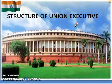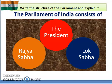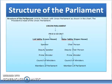First of all, let us discuss what is meant by structure of Union Executive. The Union Executive or the Parliament consists of the President, Rajya Sabha and Lok Sabha. Article 79 deals with Union Parliament as shown in the chart. The President is the head of the Union Parliament.